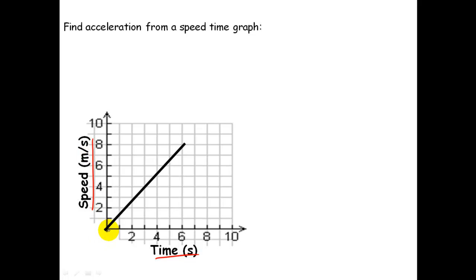At 0 seconds I'm doing a speed of 0. At 2 seconds I'm doing a speed of about 2.5 metres per second. At 4 seconds I'm doing a speed of about 5 metres per second. We can see that the speed is increasing, so this is acceleration.